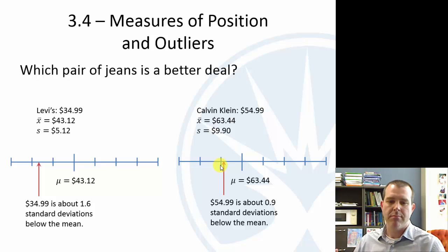So again, this isn't a perfect way to compare them, but you could say, in terms of the number of standard deviations, the Levi's one is more standard deviations below the mean. And again, it's just an option. It might not be the best way, but I'm just kind of using this to illustrate these ideas.